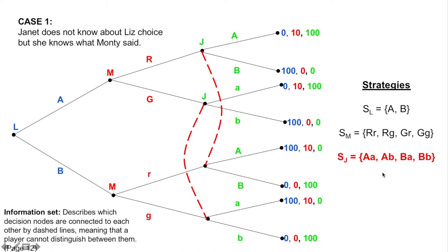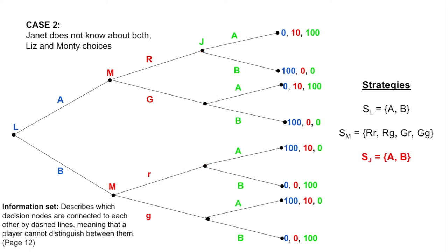I want you to think about another case. In this case, Janet doesn't know about anything. Neither Liz's decision nor Monty's decision. So if we have something like that, then we have a dotted line like that. That information set says at the moment Janet is deciding she was completely out of the room and she doesn't know anything at all. So the information set is just one. We see J is just appearing once. And the letter, the strategy letter is just one. It's gonna be either A or B. It's like out of the blue, she doesn't know anything at all.